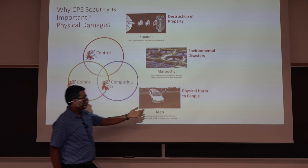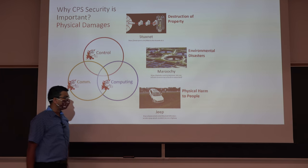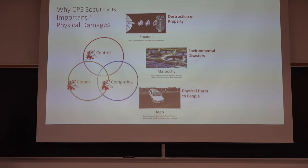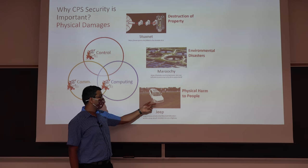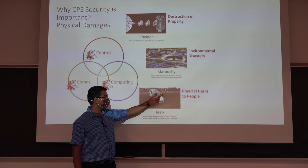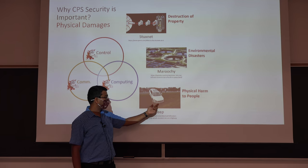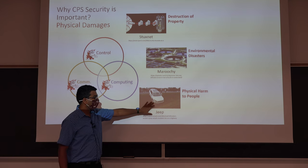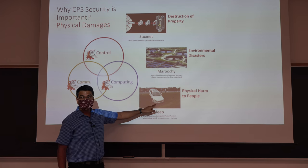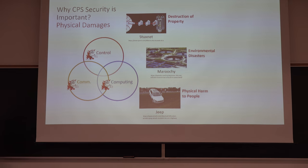You could also have physical harm to people. A Jeep Cherokee was attacked in 2015 by researchers: the researchers were in Dallas, Texas, and they remotely steered a car in St. Louis into a ditch on the side of the road, even though there was a driver inside. As new technologies come up, similar problems could arise in newer systems.